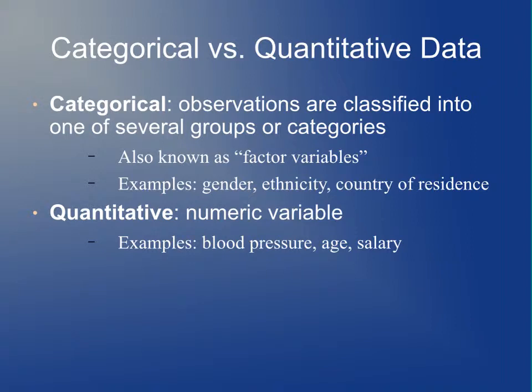Additional terminology: let's discuss the difference between categorical and quantitative data. Categorical data is when observations are classified into one or several groups or categories, sometimes known as factor variables in R. For example, gender, ethnicity, country of residence. In this case there's not some sort of numeric value for gender or ethnicity—it's either male or female, or ethnicity would be like white, black, Hispanic, Asian, something like that. It's when there's a series of different possible categories. Quantitative is a numeric variable: blood pressure, age, salary, things like that.